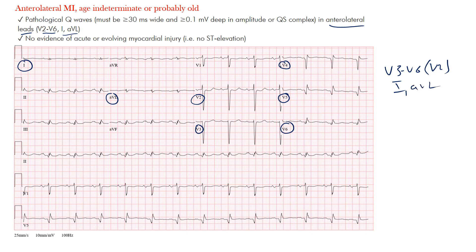When we're looking at the age-indeterminate or probably old form, the key finding we want to note in these leads is pathological Q waves. These are sometimes hard to identify, but you really want them to be at least 30 milliseconds wide and 0.1 millivolts in depth — though probably even deeper than that in practice.